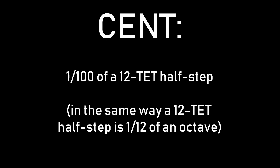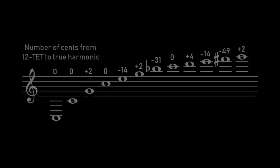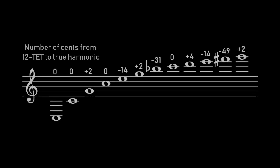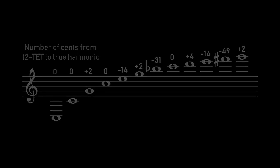A cent is one one-hundredth of a 12TET half-step, so 50 cents would be a quarter-tone, etc. Microtonal modulation uses this tuning difference between equal temperament and just intonation to modulate by tiny amounts without ever sounding out of tune, and in many cases without the listener even realizing it.